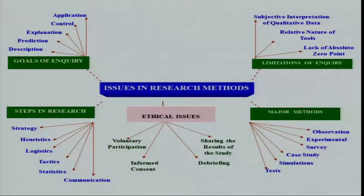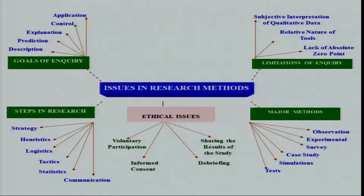The issues in research methods need to be understood in order to understand the conventional methods. In conventional research programs, as well as unconventional ones, there are certain major methods, certain steps in research, certain goals of inquiry, and certain limitations of inquiry in behavioral science. Finally, there are certain ethical issues as well, which are very important, though I will not be discussing them in great detail.